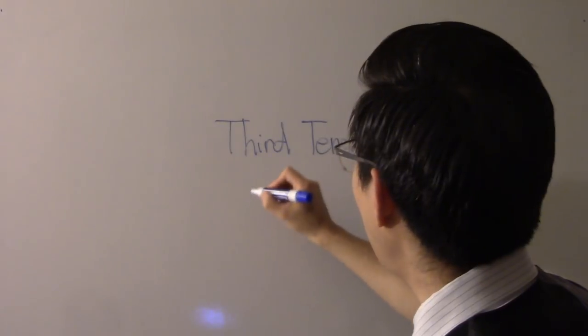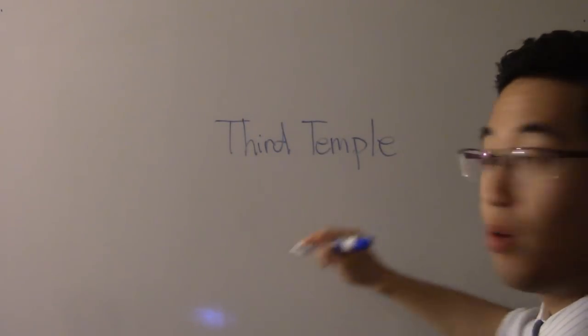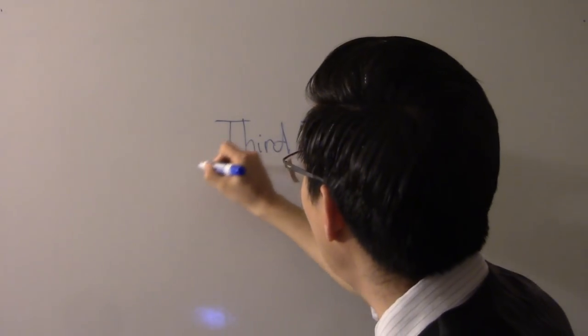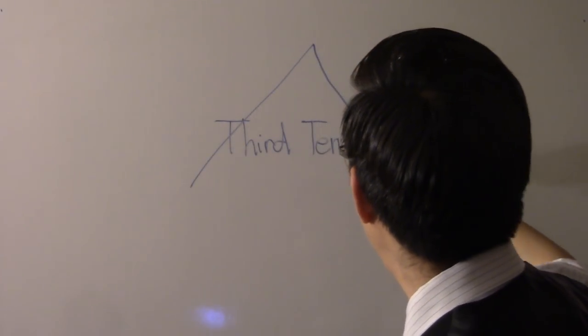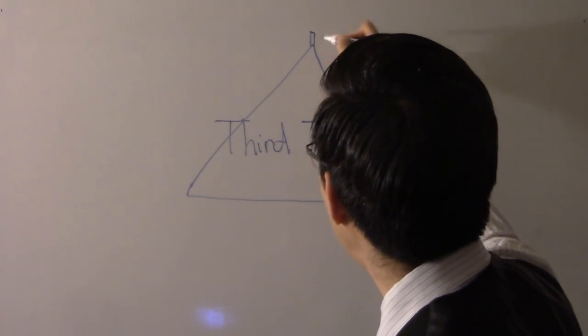What's interesting concerning the third temple is that it does not have to be a building structure. It could actually be just a simple tent. You might go, what? You're serious? Just a simple tent? Yeah, it can be just a simple tent.